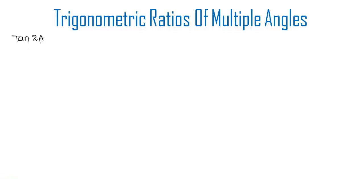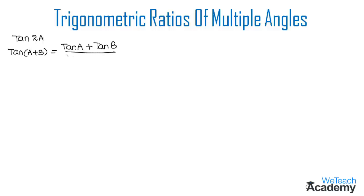In order to derive the formula for tan 2a, let us use the compound angle formula: tan(a + b) = (tan a + tan b) / (1 - tan a · tan b). Using this formula, we can write tan 2a as tan(a + a), which is in the form of tan(a + b).